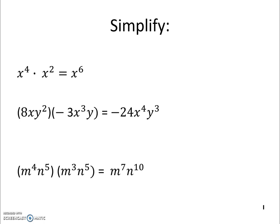m to the 4th n to the 5th times m cubed n to the 5th. We're adding exponents again, and we get m to the 7th n to the 10th.